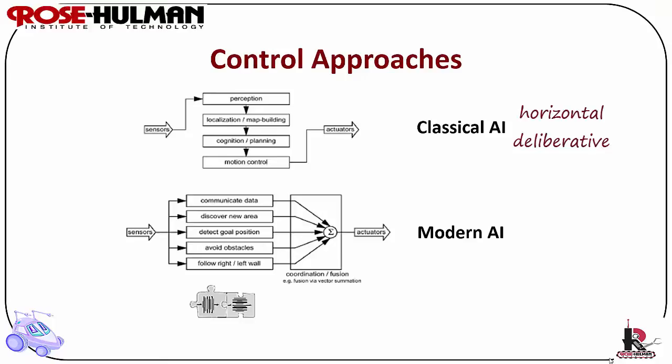In contrast, modern AI control has sparse or no modeling. It's a vertical decomposition, or bottom-up. There's one possible solution, but you can combine approaches which are good for emergent behavior. Think about behavior-based and reactive control when we talk about modern AI. Note in the graphic that sensors can trigger any of the levels, and parallel execution covers data discovery, goal or object detection, obstacle avoidance, or wall following. This model does afford emergent behavior.